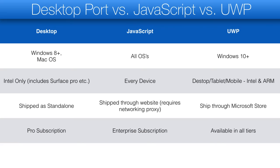A UWP app can be shipped through the Microsoft Store, which is convenient for some use cases. License requirements vary a great deal: Desktop requires Pro, JavaScript requires Enterprise, and UWP is available for everyone. Notice that even if you cancel your subscription your distribution license isn't revoked, so you are legally allowed to upgrade to Enterprise, build a JavaScript version, and then cancel your subscription.